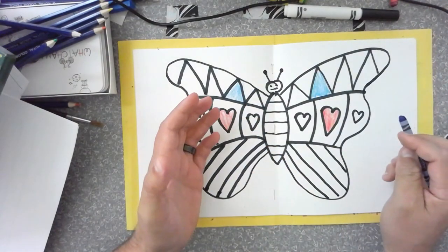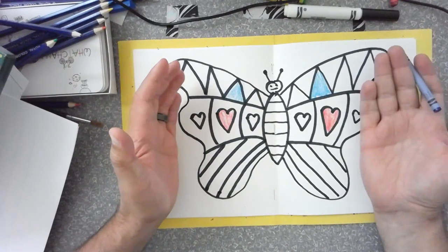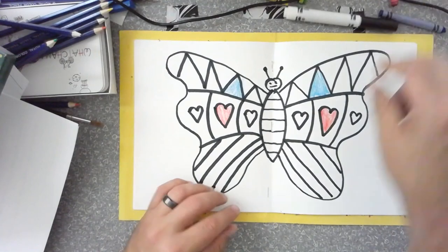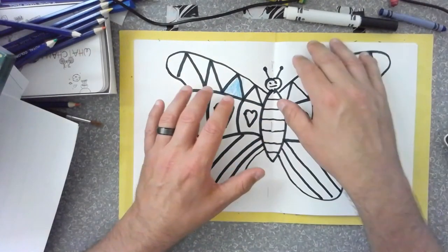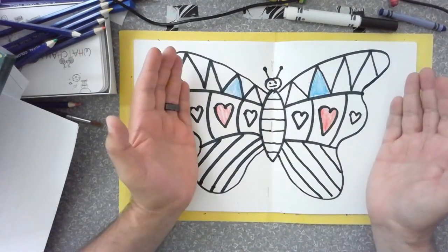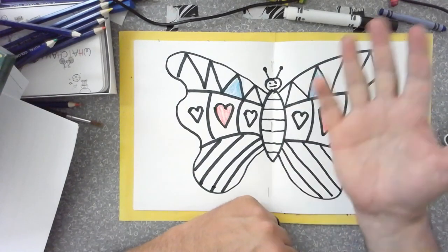So take your time. I'm gonna stop here. You can add a background, and just remember whatever you put on one side, you have to put on the other side too. So make sure you add details to your butterfly, add colors in the background, in the front. Finish it up, make it a colorful and creative masterpiece, and I will see you next time. All right, bye bye!